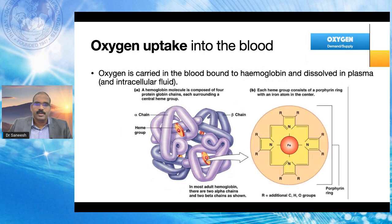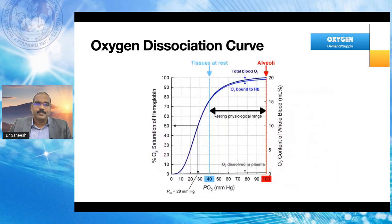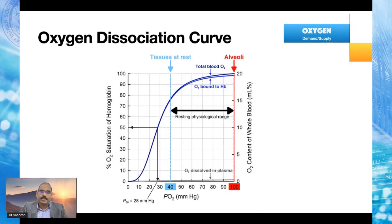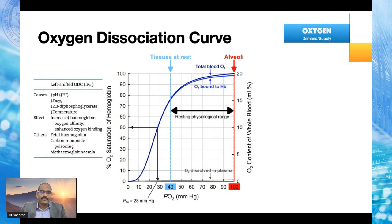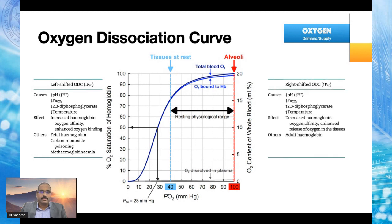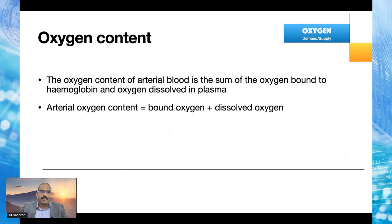We know the structure of the hemoglobin molecule with the iron atom inside it and its binding of oxygen. How much percentage of the available sites are occupied by oxygen is indicated by our oxygen dissociation curve — we always discuss when it shifts left or right and the implications. The oxygen content of arterial blood is the sum of oxygen bound to hemoglobin and oxygen dissolved in plasma, so arterial oxygen content equals bound oxygen plus dissolved oxygen.